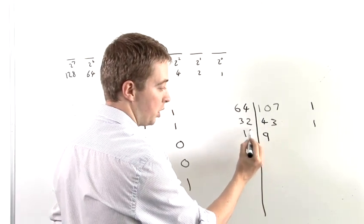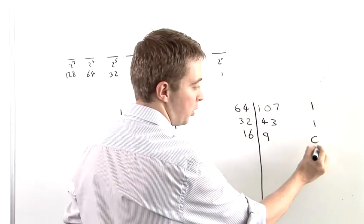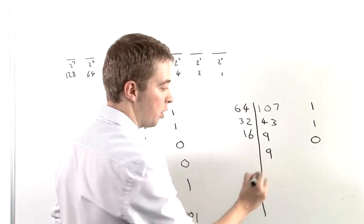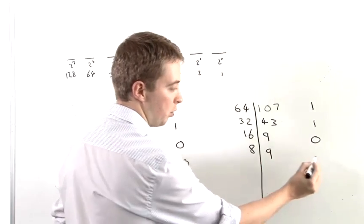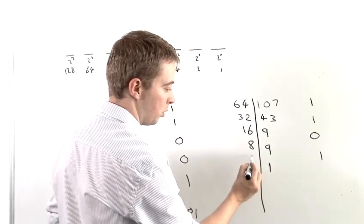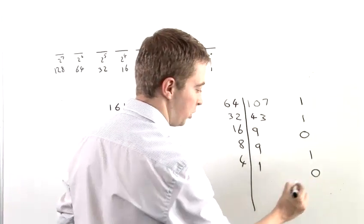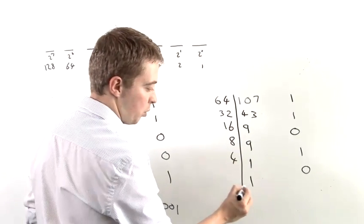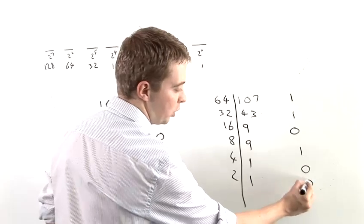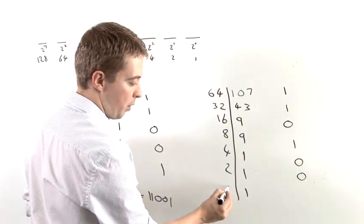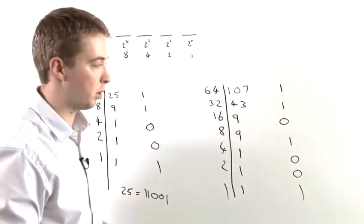We divide that by 16, and we get the result of 0 with a remainder of 9. Divided by 8, the result of 1 with a remainder of 1. Divided by 4, the result of 0, remainder 1. Divided by 2, a result of 0, remainder 1. And finally dividing by 1 gives us a result of 1.